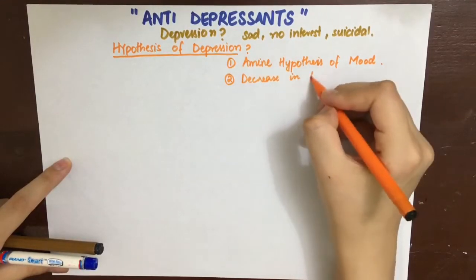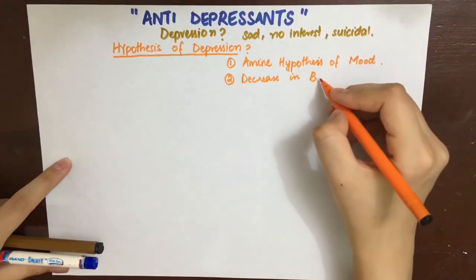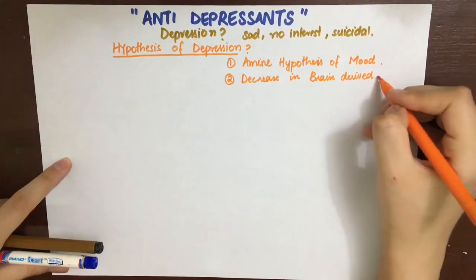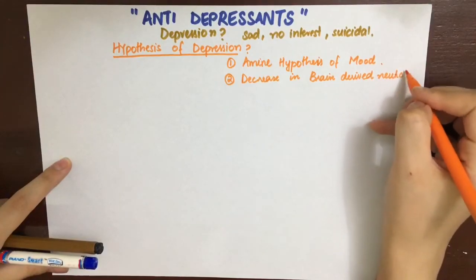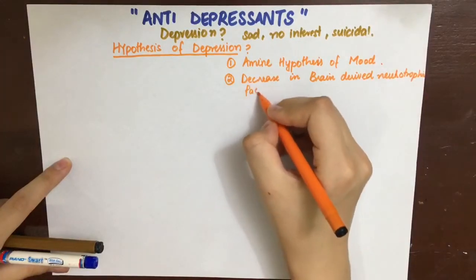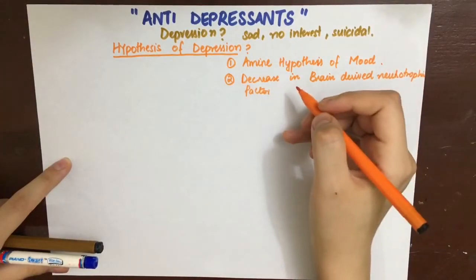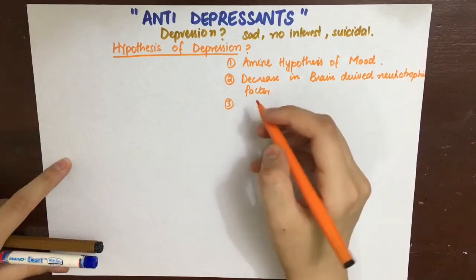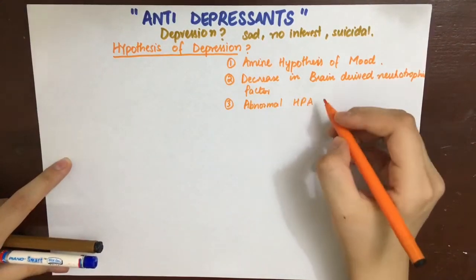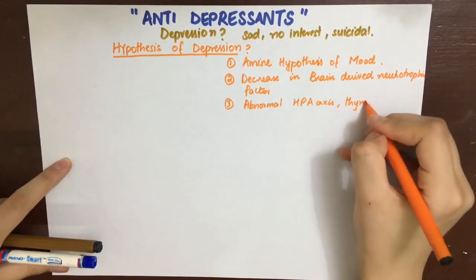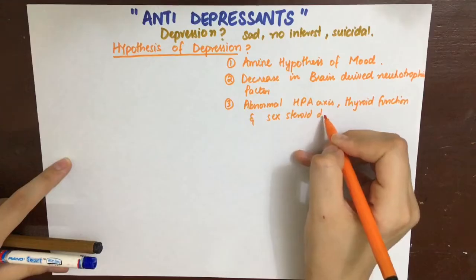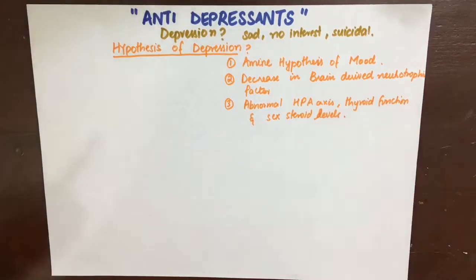A second cause that is thought to play a role in depression is a decrease in brain-derived neurotrophic factor, which forms a protein that promotes survival of nerve cells, or neurons, by playing a role in the growth, maturation, and maintenance of these cells. Abnormalities in hypothalamus, pituitary, adrenal axis, thyroid function, and sex steroid levels are also thought to have played a role in depression pathophysiology.